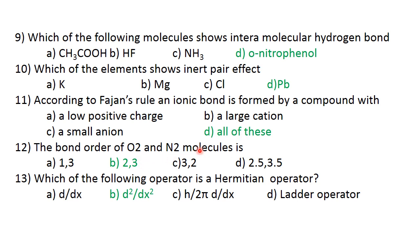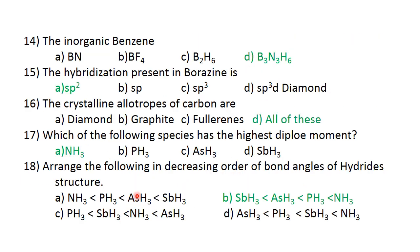The bond order of O2 and N2 molecules: O2 has bond order 2, N2 has bond order 3. Answer is option B. Which of the following operator is a Hermitian operator? Answer B, d square by dx square. The inorganic benzene is B3N3H6, called inorganic benzene. The hybridization present in borazine is sp2.